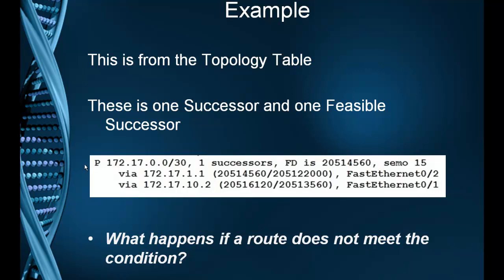In your topology table, you'll have a bunch of destination networks. You'll have at least one successor because there has to be a path to get there. Then if there are other entries, they may be feasible successors or they may be equal cost load-balancing paths. If this case had two entries and said two successors, we would have load balancing. But it says one successor, so the first one is the successor and everything else underneath must be a feasible successor.